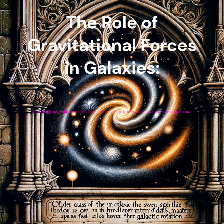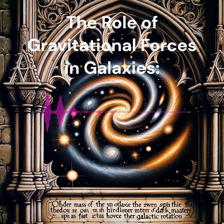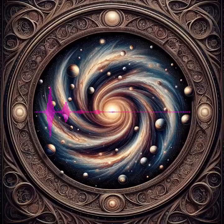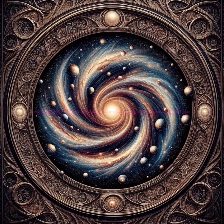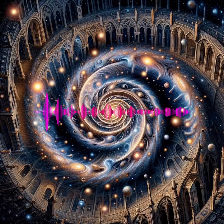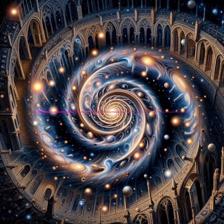Galactic Rotation. Galaxies spin, and this rotation is not just a spectacle — it's a clue to the hidden mass within. Most of this mass is dark matter, invisible yet detectable by the gravitational pull it exerts. This mass, including the stars and gas we can see, holds galaxies together and drives their rotation.